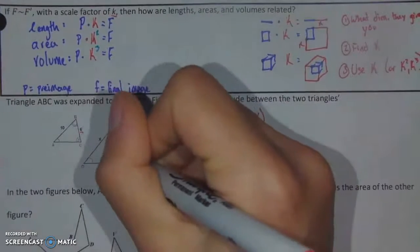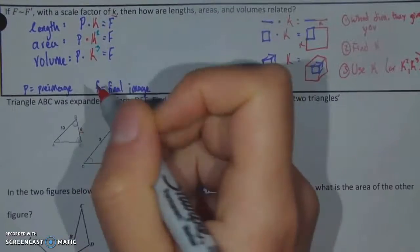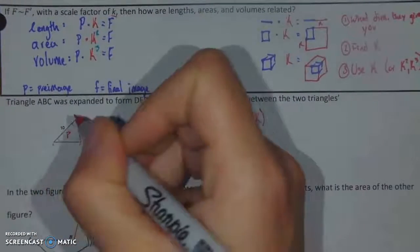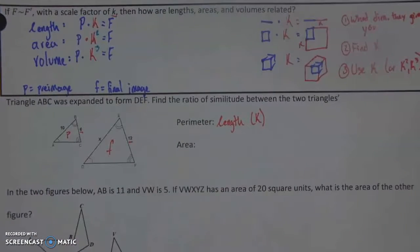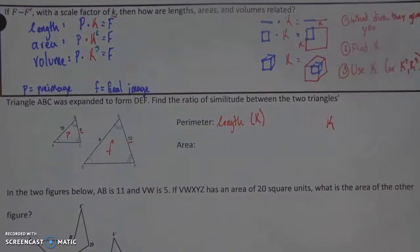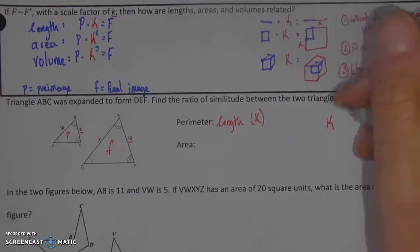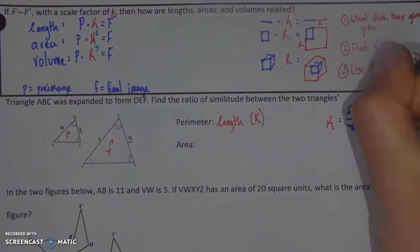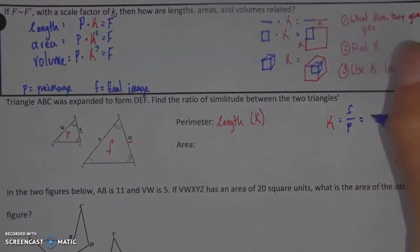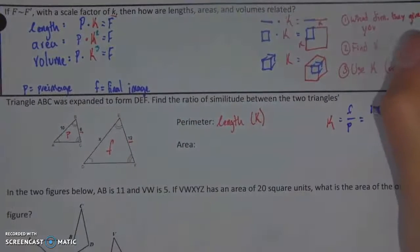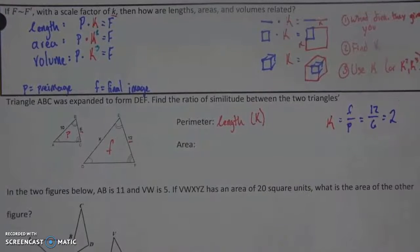So, I just need to know which is my pre-image and which is my image. Well, DEF is my final image and ABC is my pre-image. And don't forget that we can find k by doing our final image over our pre-image. So, that means in this case I'm taking my 12 over my 6 to get 2. So, k is equal to 2.